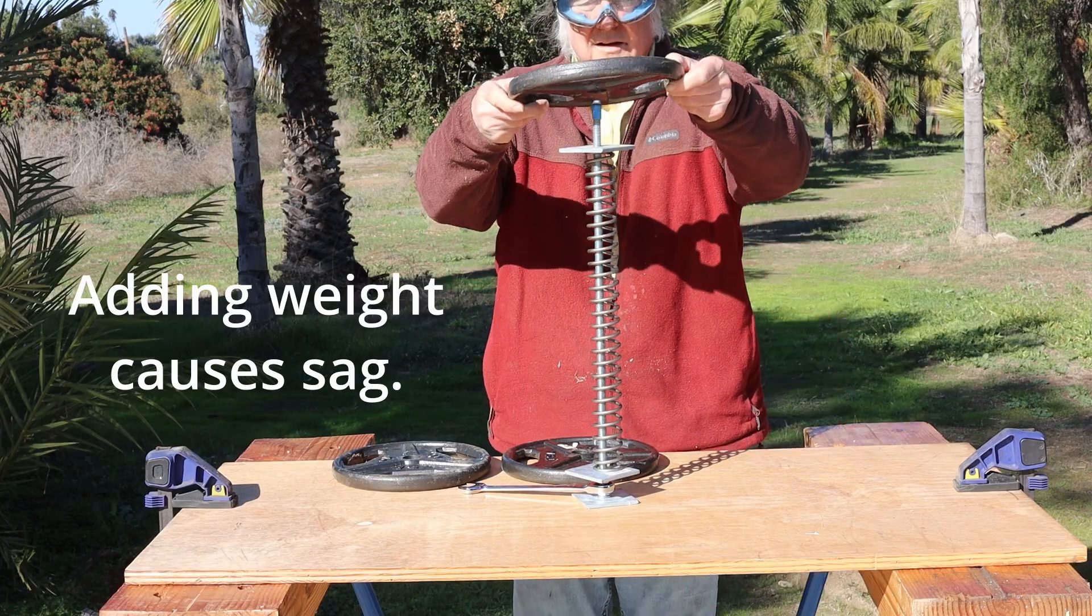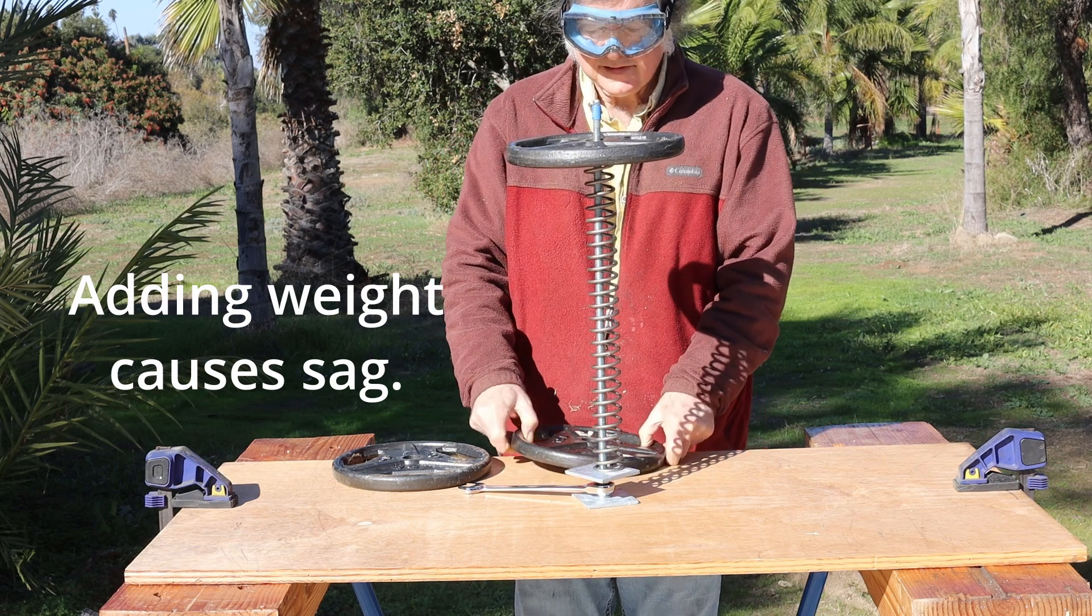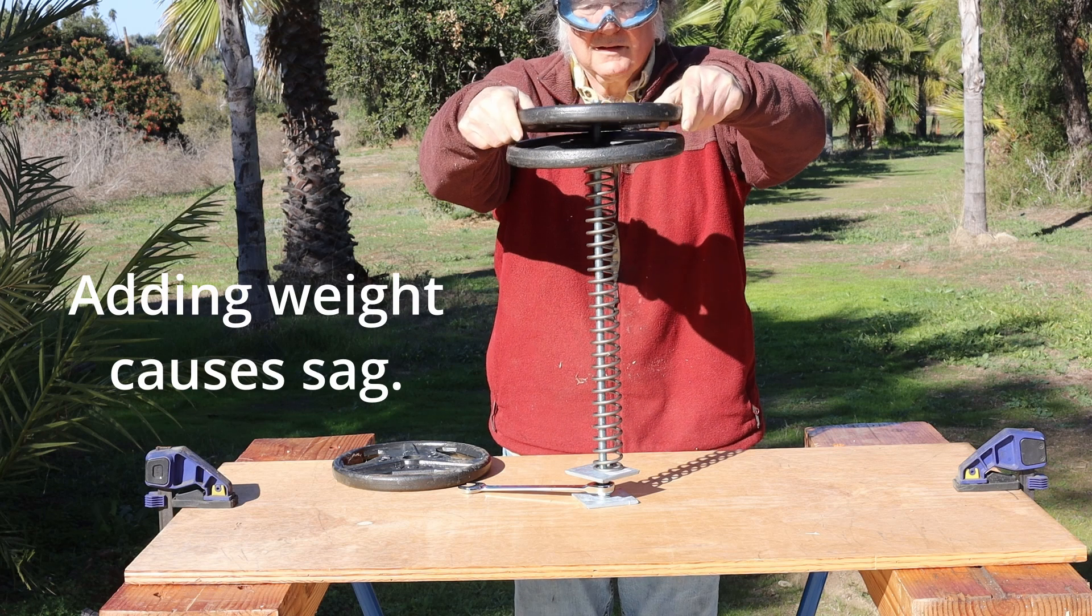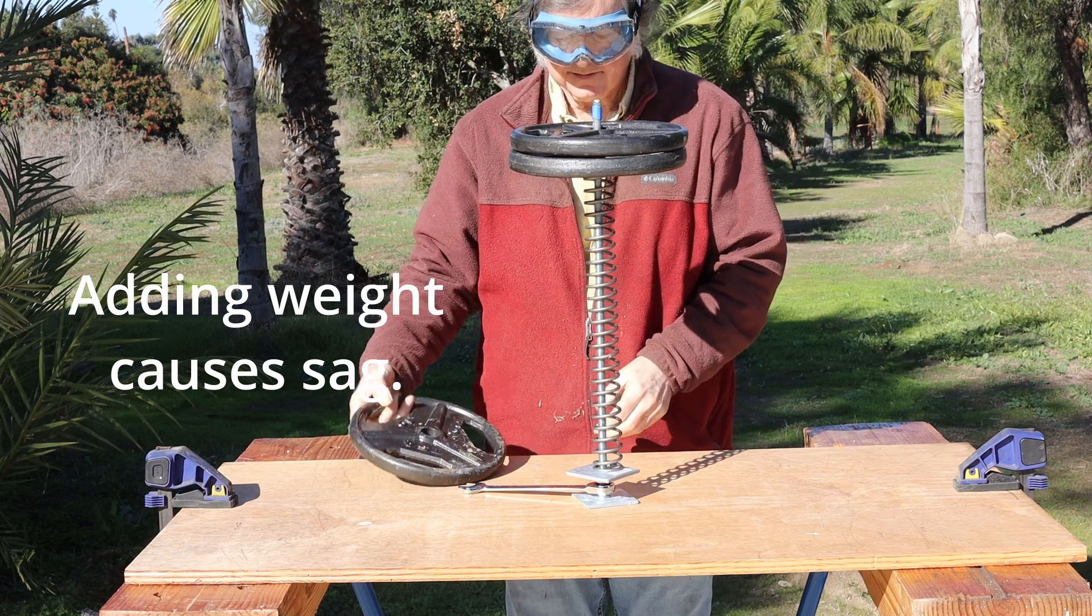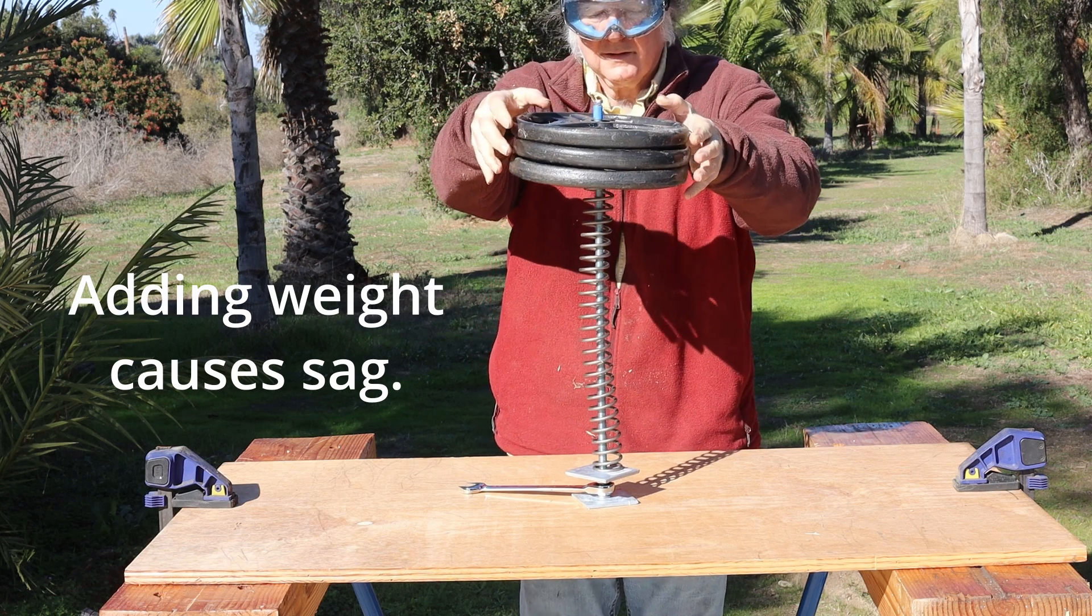Adding weight causes sag. The spring constant for this fork spring is about 20 pounds per inch, or 0.37, presumably kilograms per millimeter. It is available in a range up to 0.5 kilograms per millimeter, or about 28 pounds per inch.